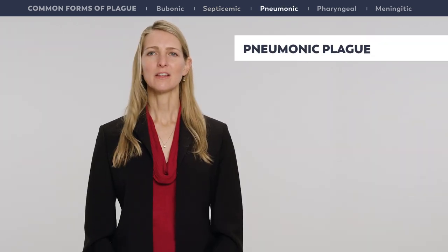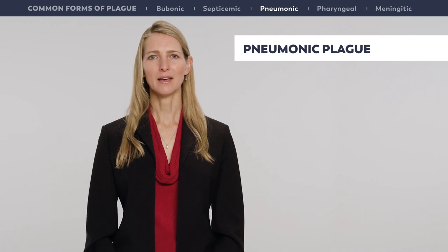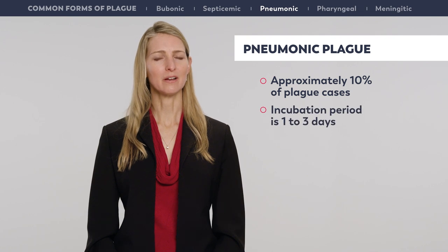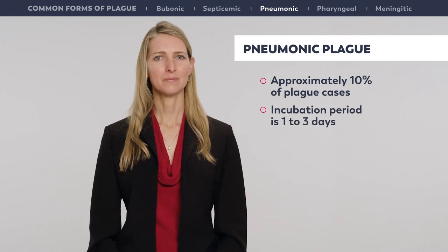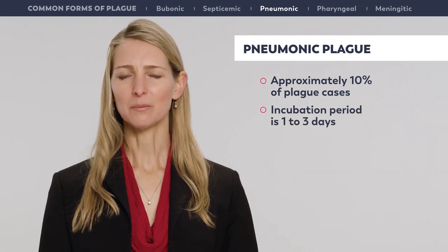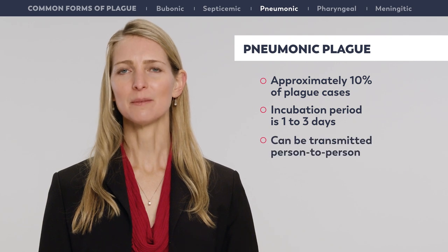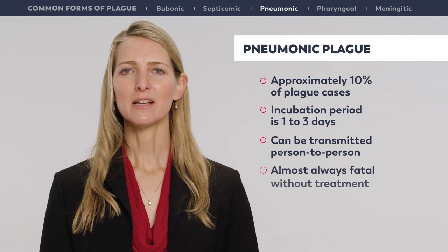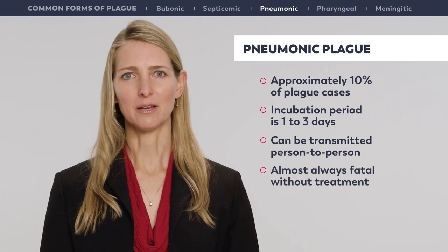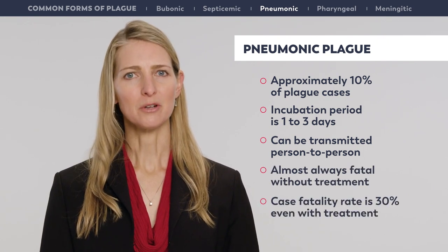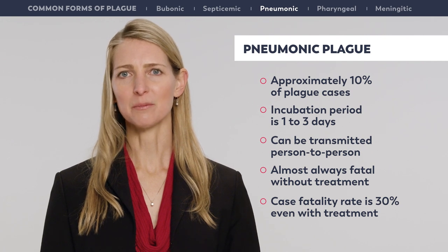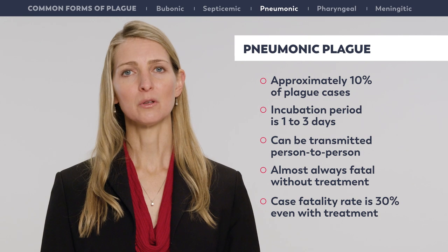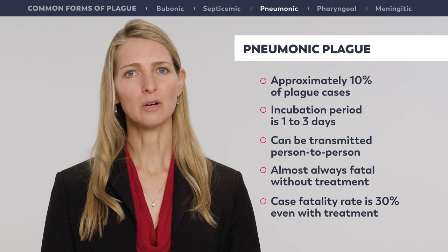Pneumonic plague is the third most common form of plague, accounting for approximately 10 percent of cases. It has a shorter incubation period of just one to three days. Pneumonic plague is notable because it is the only form that can be transmitted from person to person. Pneumonic plague is almost always fatal without treatment, and even with prompt treatment, the case fatality rate is nearly 30 percent. Patients with pneumonic plague are likely to have a prolonged hospitalization and slow recovery.